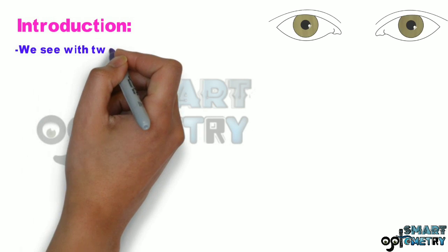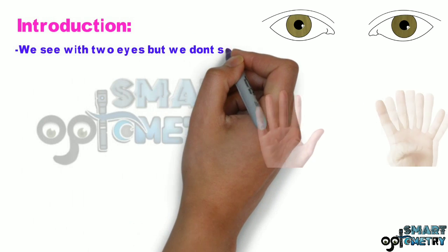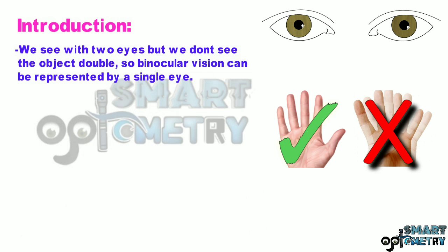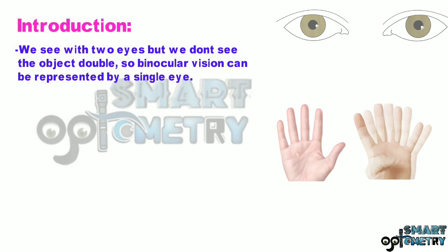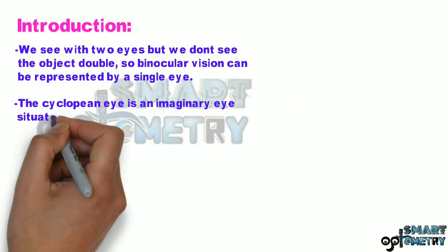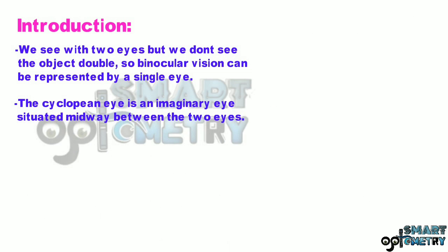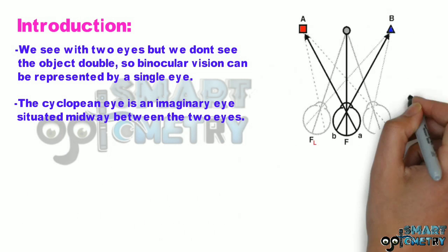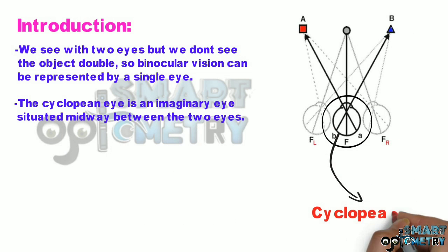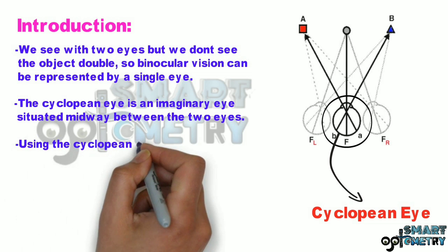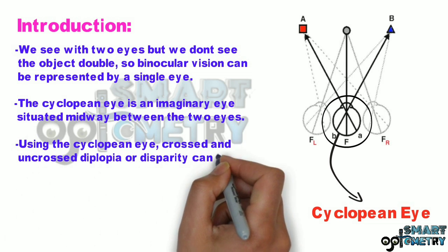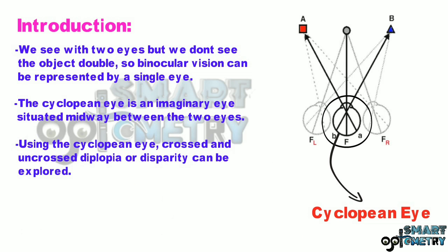We see with two eyes but we don't see objects double, so binocular vision can be represented by a single eye. The Cyclopean Eye is an imaginary eye situated midway between the two eyes. As shown in the diagram alongside, using the Cyclopean Eye, crossed and uncrossed diplopia or disparity can be explored.